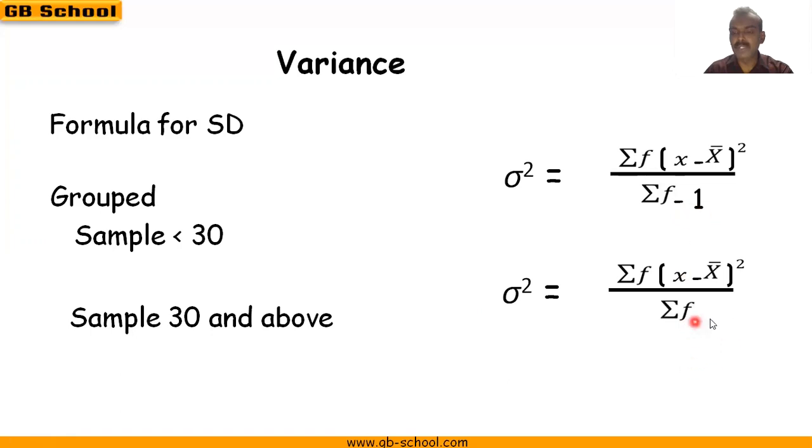The minus 1 will not be there if sample size is 30 and above. It is applicable for both ungrouped data as well as grouped data.